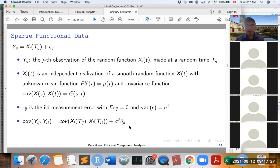Delta_JL is equal to 1 if J is equal to L, and 0 otherwise. So this is the covariance function for Y_IJ and Y_IL. Any questions so far? Okay, great, let's continue.